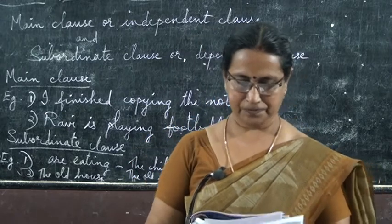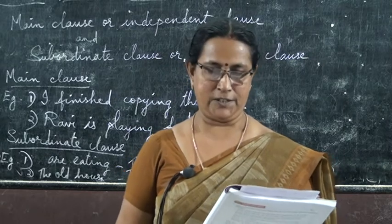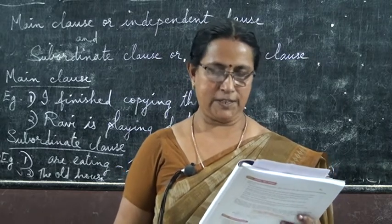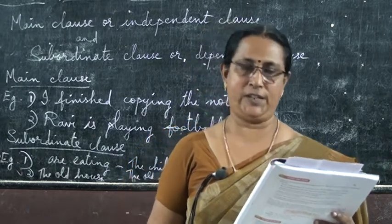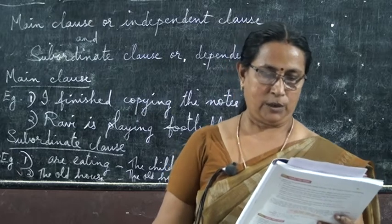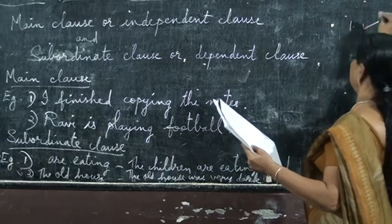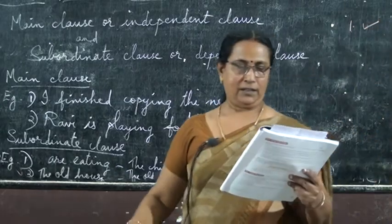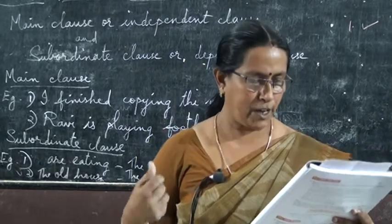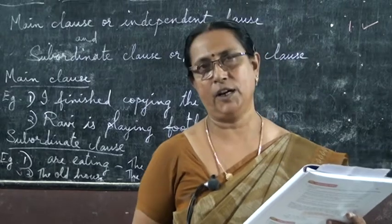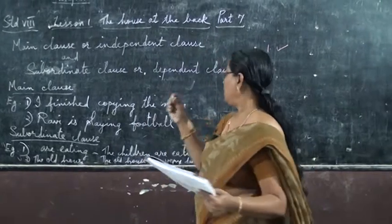Exercise J: Read these clauses. Tick those that are complete sentences and underline one phrase in each. Number one: 'The path was overgrown with weeds and grass' — that is a complete sentence, and the phrase underlined is 'weeds and grass.' Number two: 'If Miss Brown was not a real person' — that is not a complete sentence, so number two is wrong.